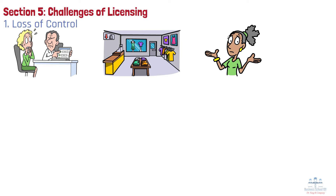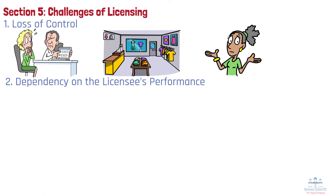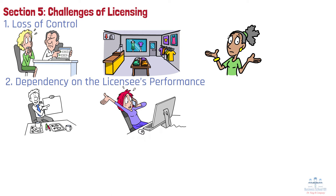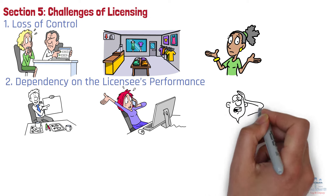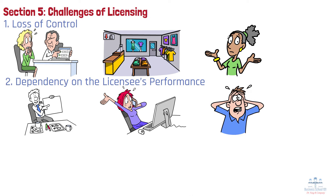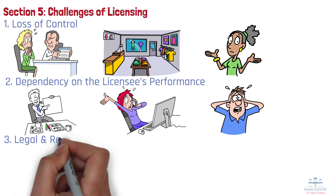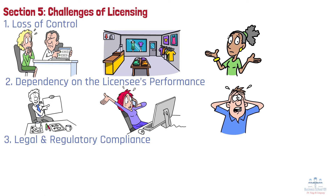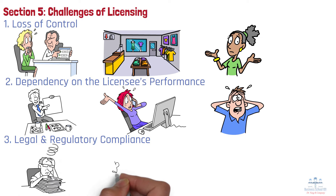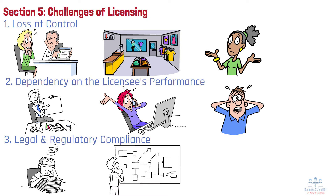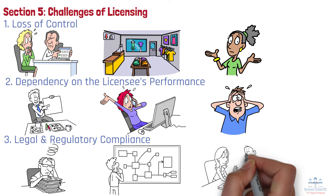Number 2: Dependency on the licensee's performance. A licensor's success may depend on the licensee's ability to market or distribute the product. Poor performance can negatively impact both parties. For example, a poorly managed distributor of a licensed software product can damage the licensor's reputation if the product is poorly marketed or supported. Number 3: Legal and regulatory compliance. Licensing agreements across borders may involve navigating complex legal environments and protecting intellectual property in unfamiliar regulatory frameworks. For example, a U.S. software company licensing its product in Europe must ensure compliance with local data privacy regulations.